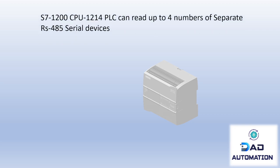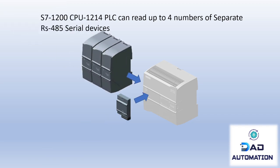Consider the S7-1200 PLC CPU 1214 module. Normally this PLC can handle up to four separate RS485 modules at one time — one communication board and three communication modules — so four separate Modbus RTU networks can be handled simultaneously. Therefore, theoretically, a large number of Modbus RTU devices can communicate with this PLC.